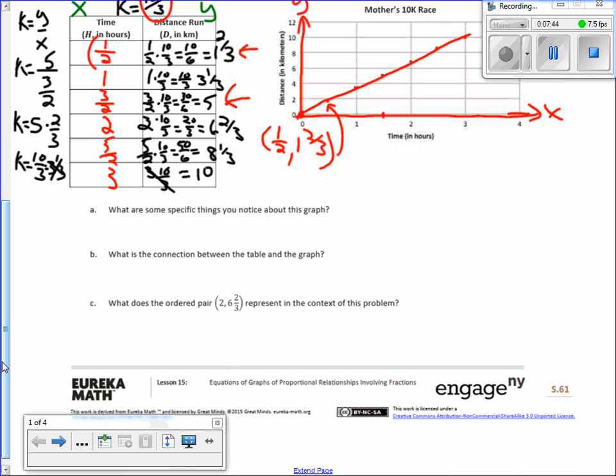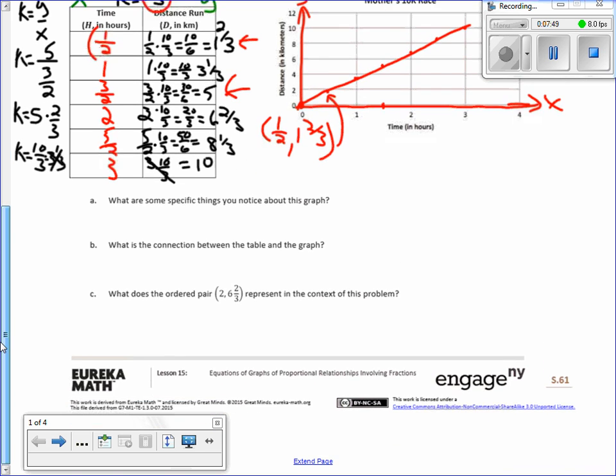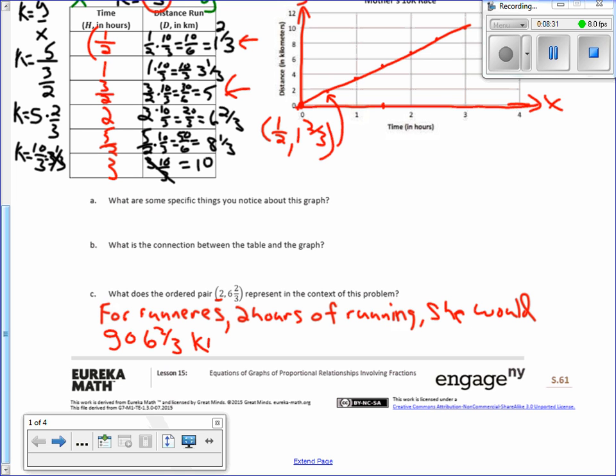C says what does the ordered pair two comma six and two thirds represent in the context of this problem? Well, x is time and y is distance. So the answer to this question would say for the mother, when she ran two hours, or two hours of running, she would go six and two thirds kilometers. That's what that means. If you run two hours, the distance is six and two thirds.